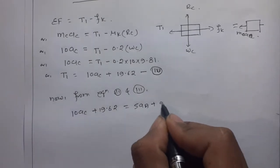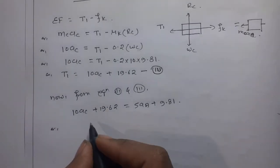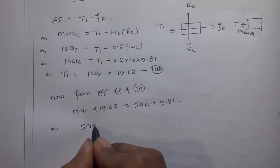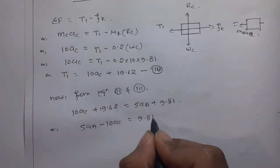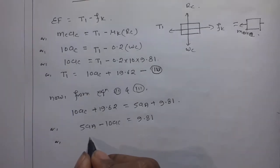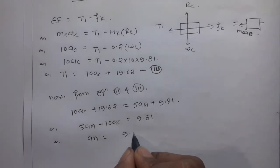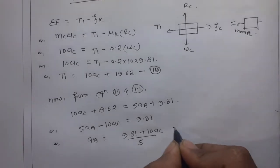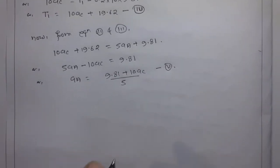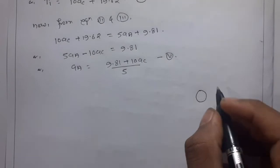From Equations 2 and 4, equating the two expressions for T1: 10AC + 19.62 = 5AA + 9.81, which gives 5AA − 10AC = 9.81, or AA = (9.81 + 10AC) / 5. This is Equation 5.